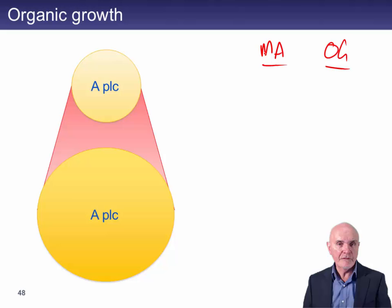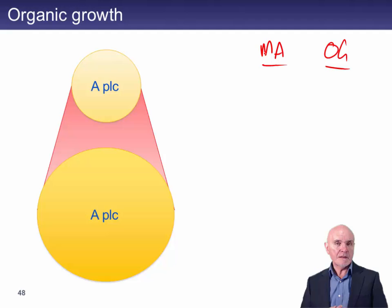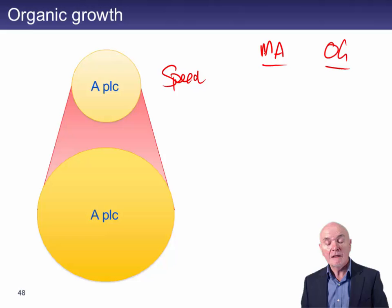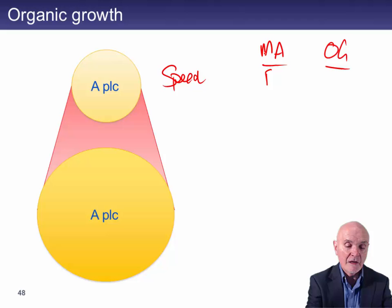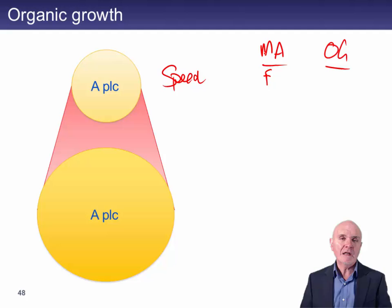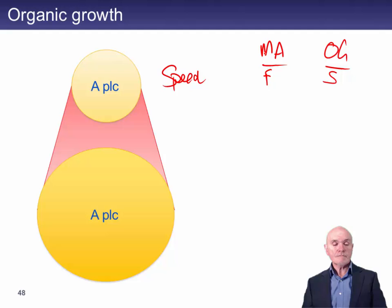I'll call them characteristics rather than advantages and disadvantages because sometimes it's not altogether clear to know which is which. The first one I'll look at is speed. If you want to get into a new country quickly or launch a new product range quickly, then merger and acquisition is going to be relatively fast. You can take over a company which is already in the country and you're instantly there. Whereas organic growth is going to take some time — this is slow.